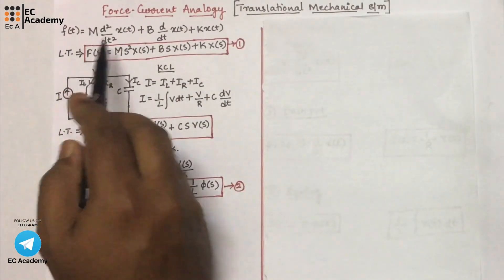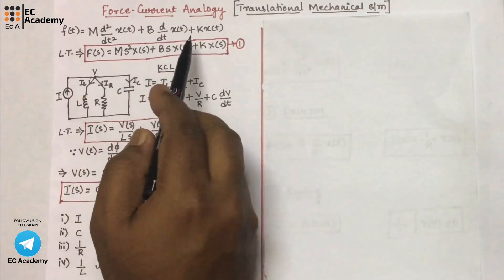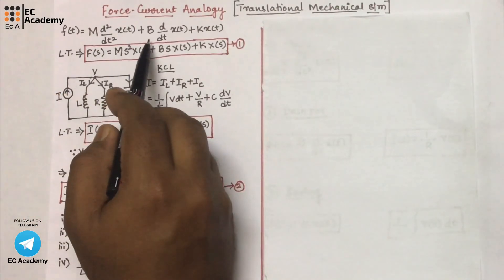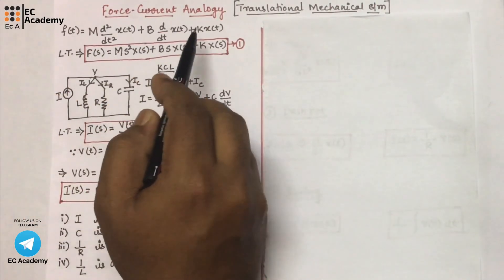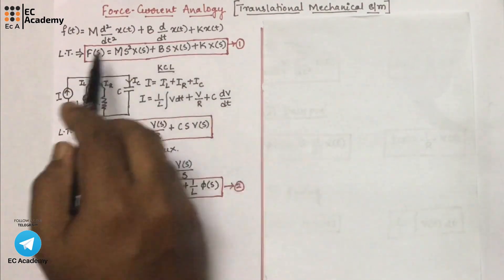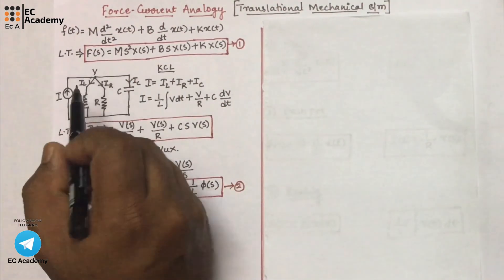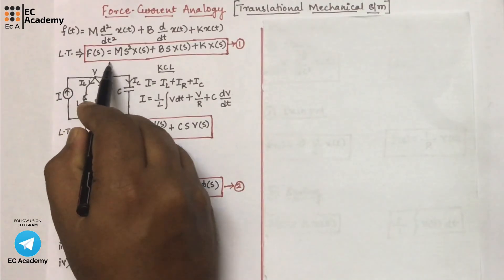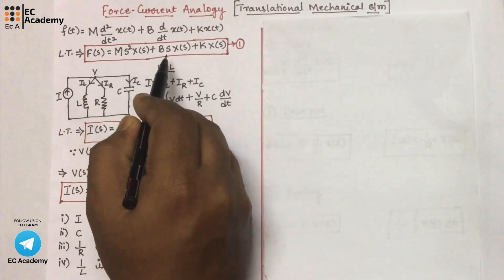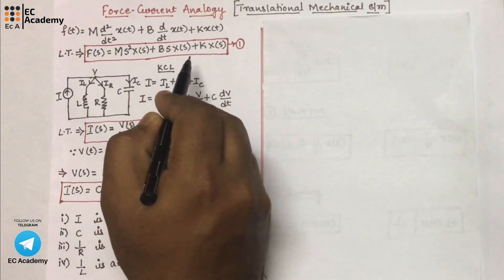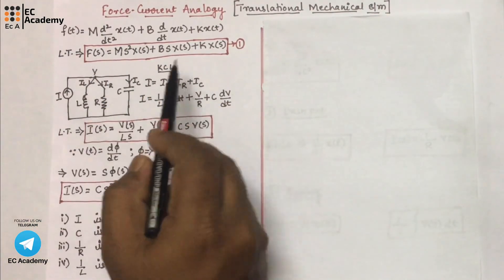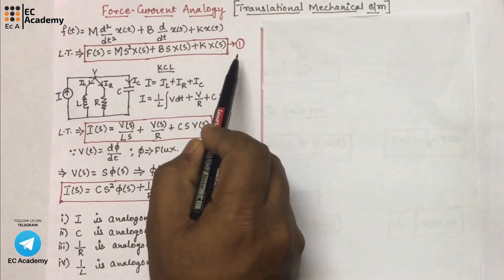Here we have all three elements of a mechanical system, where m is the mass, b is the friction or dashpot, and k is the spring. For this equation, if we apply Laplace transform, we will get F(s) = ms²X(s) + bsX(s) + kX(s). Let us consider this as equation number 1.